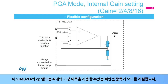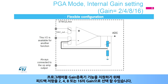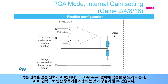The STM32L4's op-amps support non-inverting amplifier mode with four fixed gains available. The feedback resistors can be selected to have a gain of 2, 4, 8, or 16 to support the programmable gain amplifier function. It may also be beneficial to use the op-amp as an ADC input, so that the full dynamic range of the analog-to-digital converter can be applied to signals having a small amplitude.